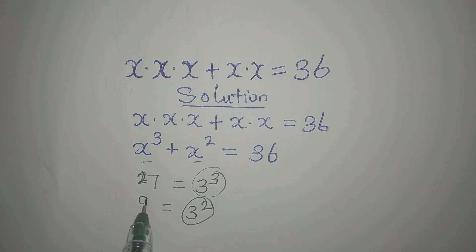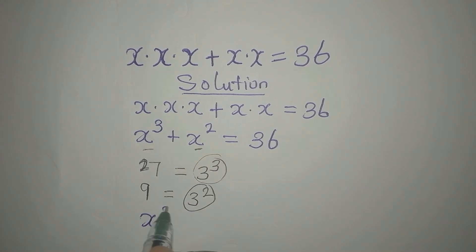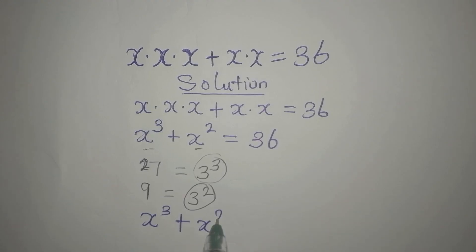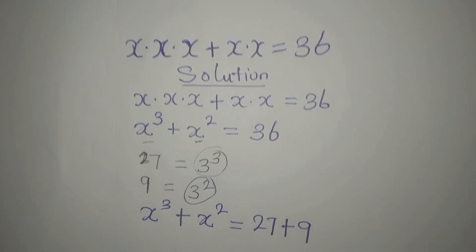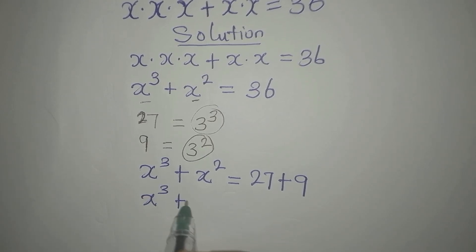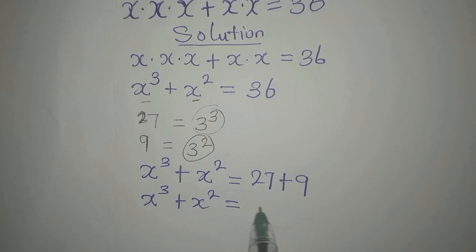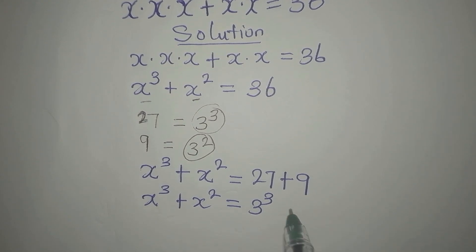So we can compare this and this, and then compare this and this. Let's write 27 in place of 27 and 9 in place of 36. So we have: x to the power of 3 plus x to the power of 2 is equal to 3 to the power of 3 plus 3 to the power of 2.